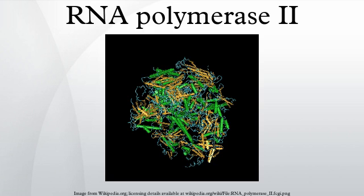RNA polymerase II is an enzyme found in eukaryotic cells. It catalyzes the transcription of DNA to synthesize precursors of mRNA and most snRNA and micro-RNA. A 550 kDa complex of 12 subunits, RNA Pol II is the most studied type of RNA polymerase. A wide range of transcription factors are required for it to bind to upstream gene promoters and begin transcription.